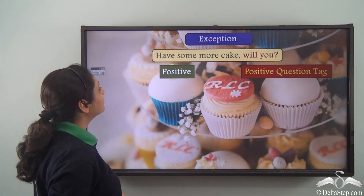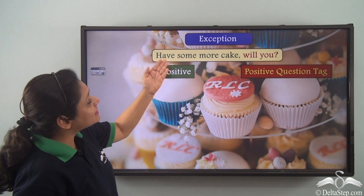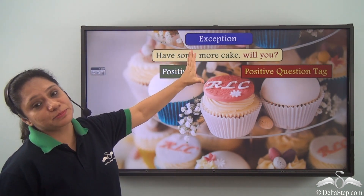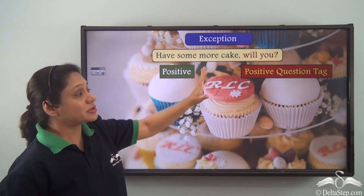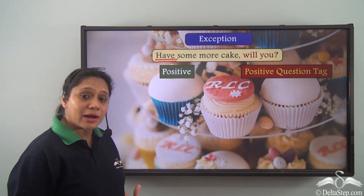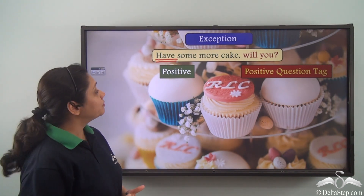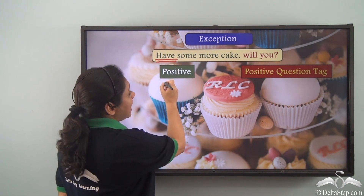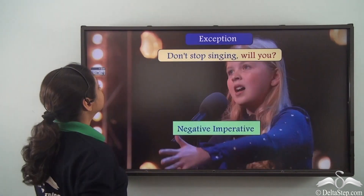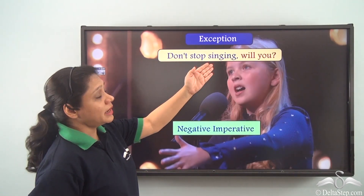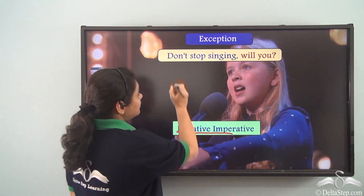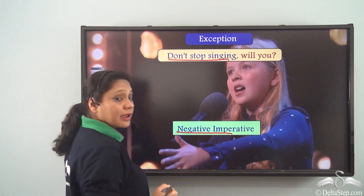When we say to somebody 'Have some more cake, will you?' this is another exceptional use of the question tag when 'have' is the main verb in an imperative — they are not inversely related. 'Don't stop singing, will you?' is an example of a negative imperative 'Don't stop singing' used with the question tag 'will you.'